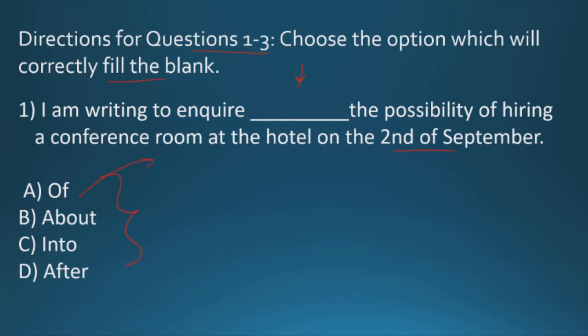The first question is: I am writing to inquire dash the possibility of hiring a conference room at the hotel on the 2nd of September. I am writing to inquire of the possibility? No, I don't think it makes any sense, so this option will get eliminated. I am writing to inquire about the possibility of hiring a conference room at the hotel. Yes, this is making sense but let's check other options too.